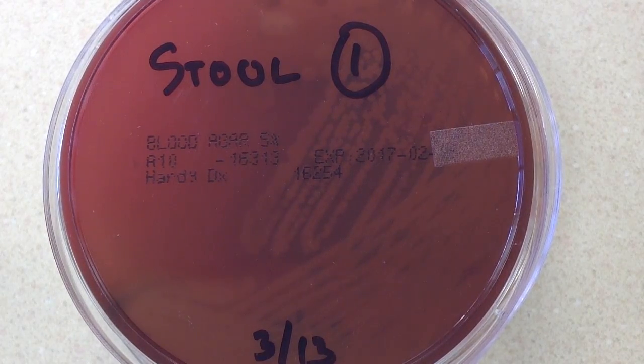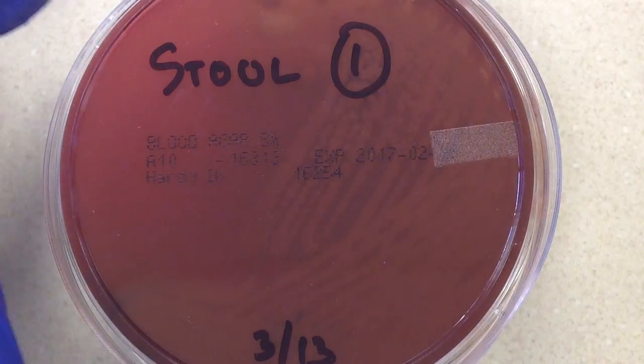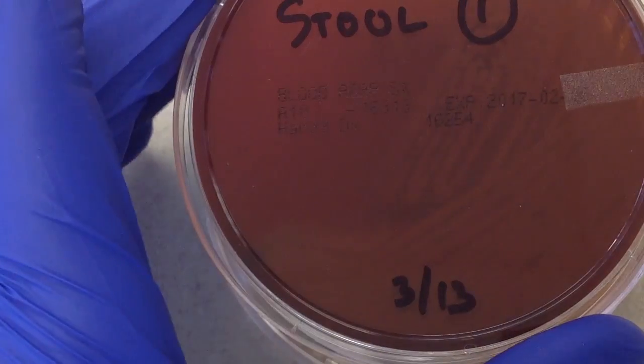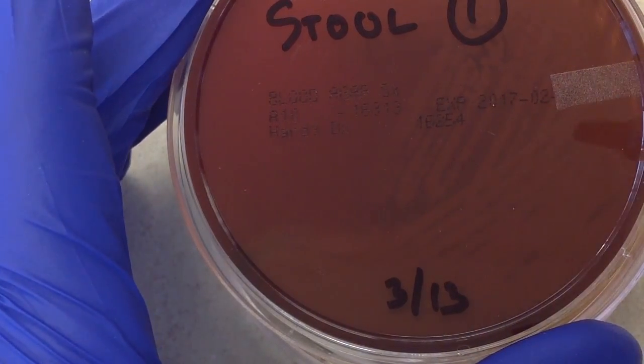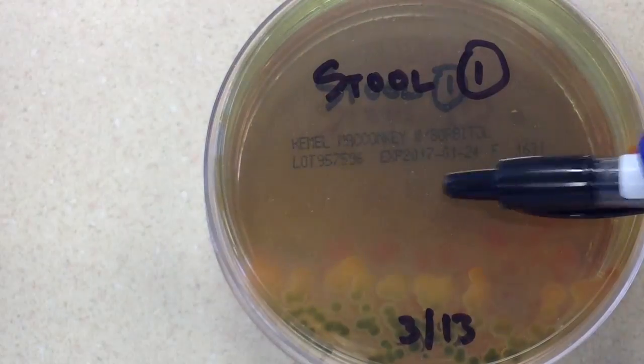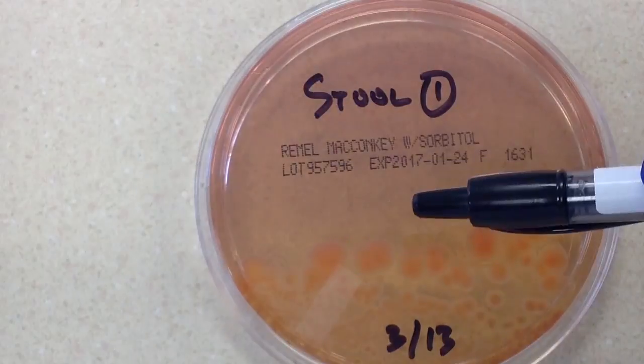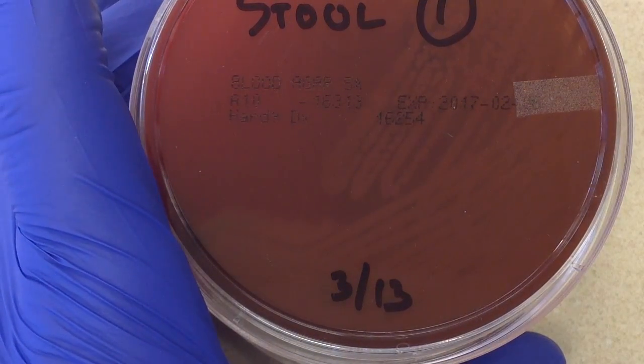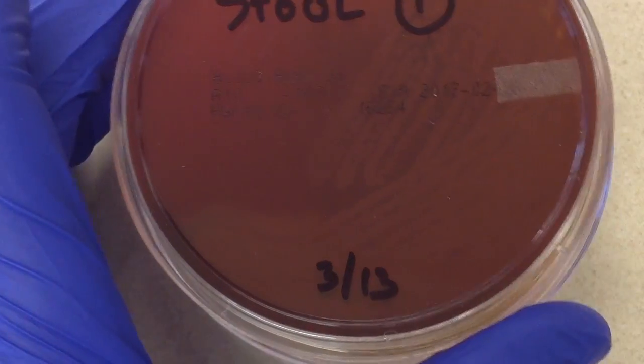This is a stool culture from a patient who was suffering from diarrhea. This particular culture is going to be set up to just a 5% sheep blood agar plate, McConkey's, hectone enteric, and McConkey's with sorbitol. Let's talk about each of these types of plates and what's growing on them.